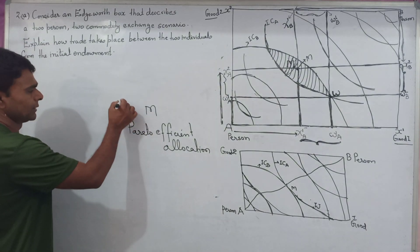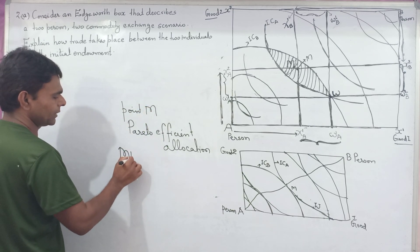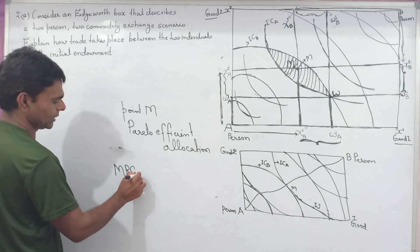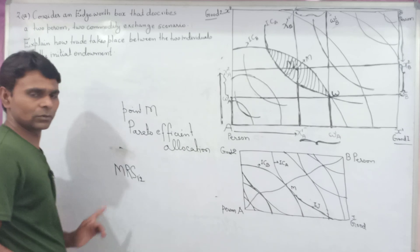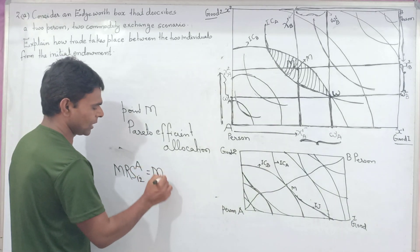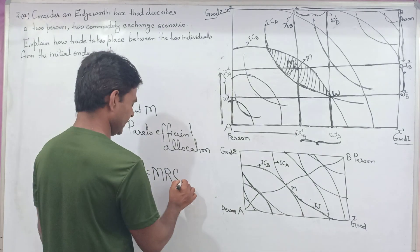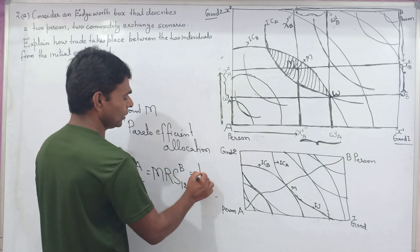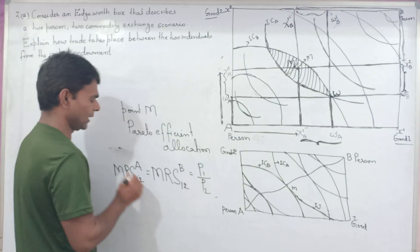At point M, the marginal rate of substitution between goods one and two for person A equals the marginal rate of substitution between goods one and two for person B, which also equals the price ratio P1 divided by P2. This is the Pareto efficient allocation.